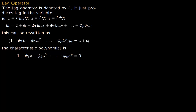We now talk about the lag operator and the characteristic polynomial. The lag operator is denoted by L and it produces a lag in the variable. For example, y(t-1) is just L of y(t), and y(t-2) is L squared of y(t) — that is, two lags applied to y(t) give you y(t-2).